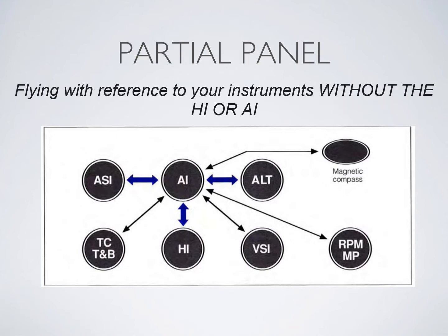A partial panel is when you are flying with reference to the instruments, but your vacuum system has failed, and you no longer have your attitude indicator — which used to be your primary — nor do you have your heading indicator. That can cause a mix-up, and has caused fatal accidents in aviation with people who were not proficient in partial panel flying under hard IFR. That's why we cover it at the commercial level.